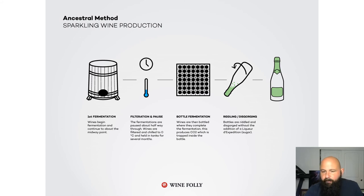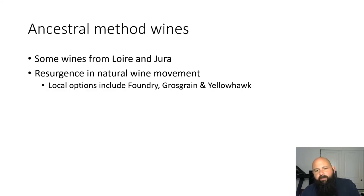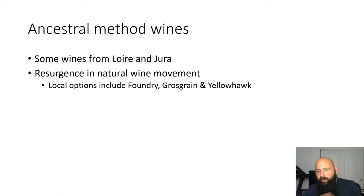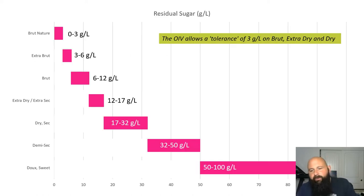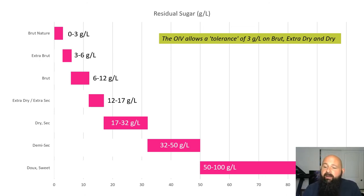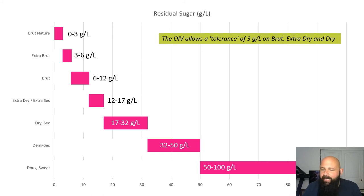Méthode ancestrale uses the natural grape sugars already there instead of adding sucrose. Most wines made this way are from places like the Jura in France, and there's interest from the natural wine movement. Locally, Foundry, Grosgrain, and Yellow Hawk have done some méthode ancestrale. Now, regarding dosage — how much sugar you add at the end — Brut Nature means none at all. Dry sparkling wines actually taste sweeter than people expect, because the perception of acid and bubbles covers up sweetness.